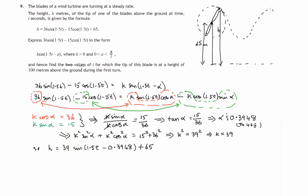We're asked to find two values of t for which the tip of this blade is at a height of 100 meters, so that equals 100. Let's subtract 65 from both sides and then divide by 39. That'll leave us with the sine of an angle, that's 1.5t minus 0.3948, the sine of an angle being equal to 35 divided by 39. We can do our trick of saying, what is the angle whose sine is 35 over 39?